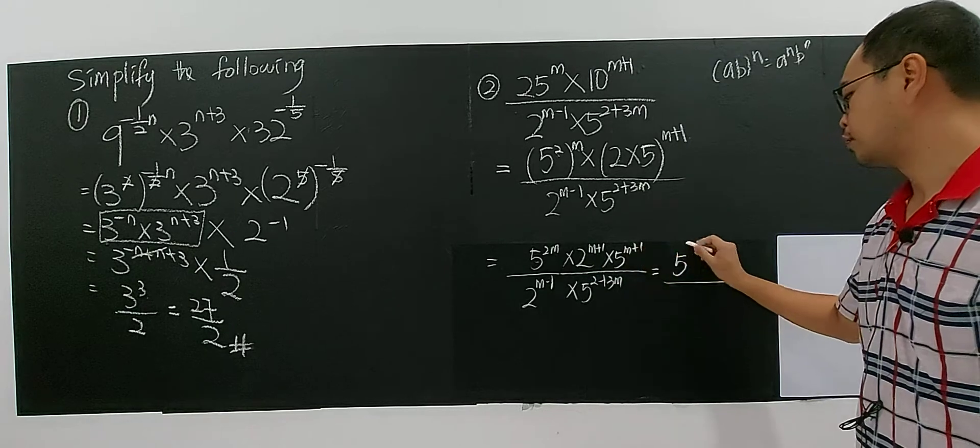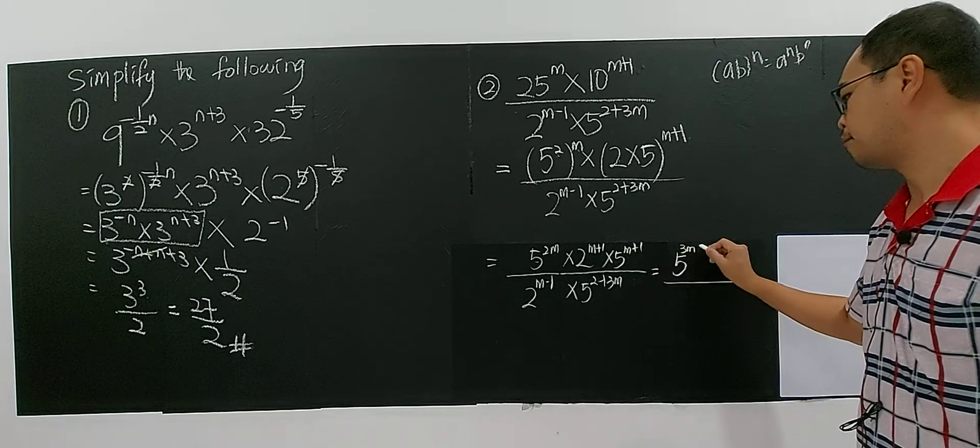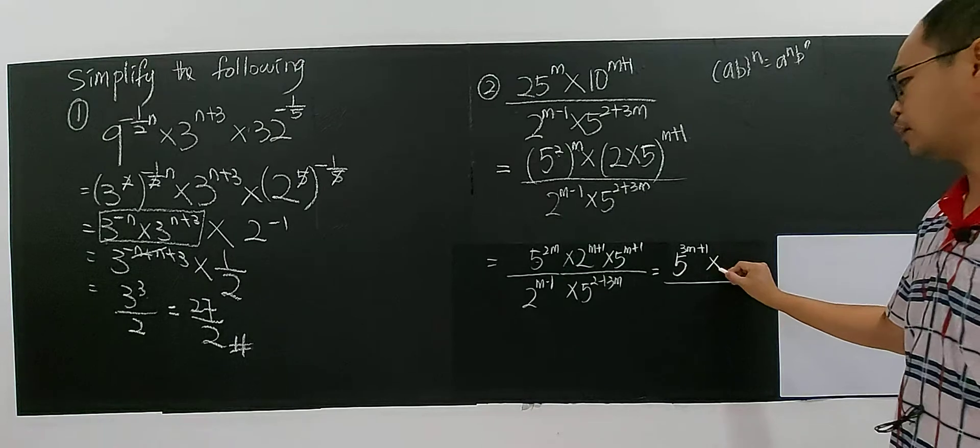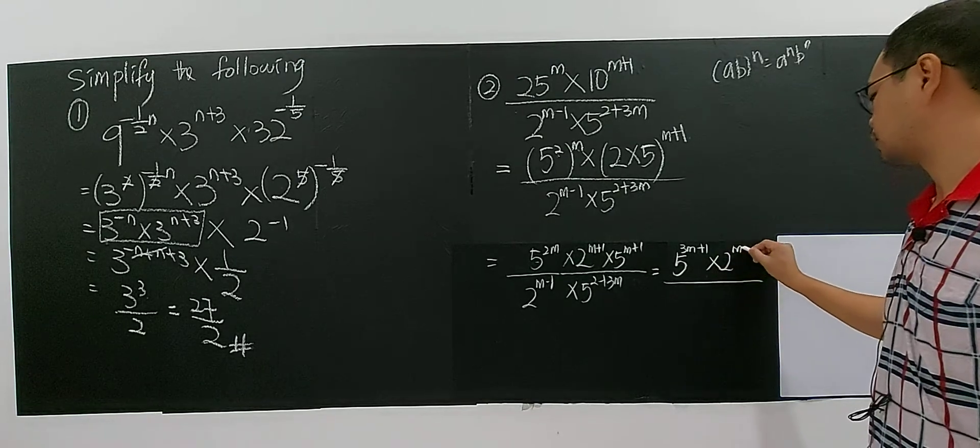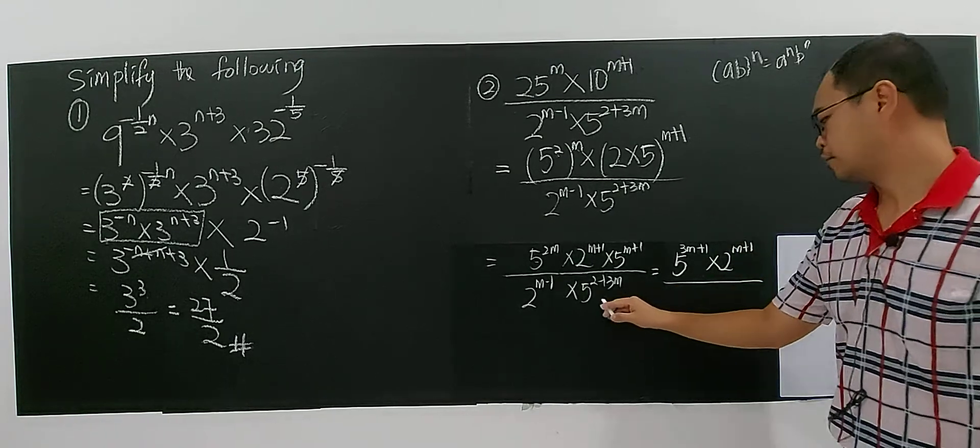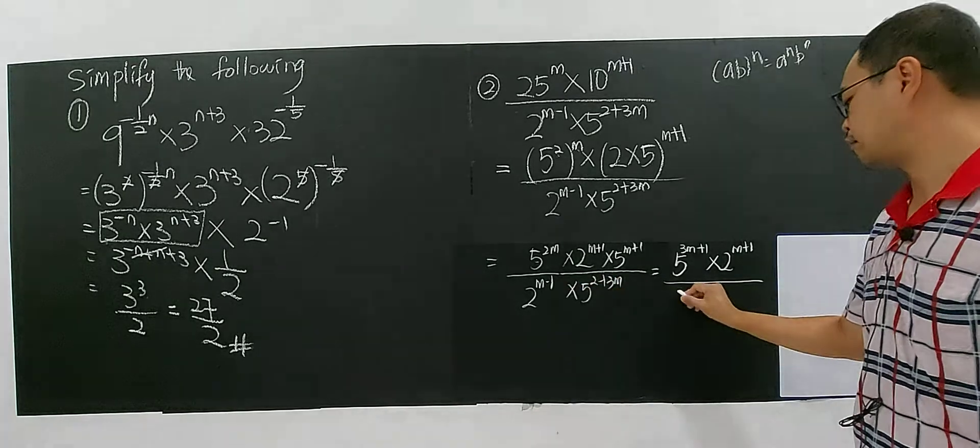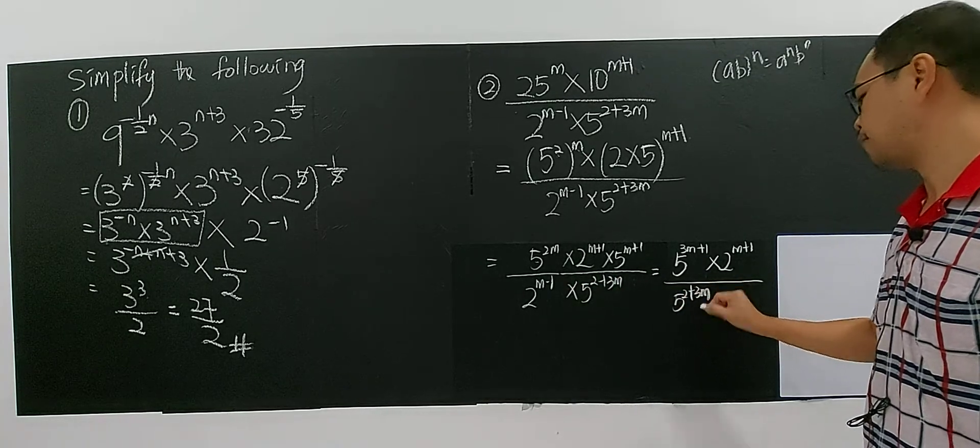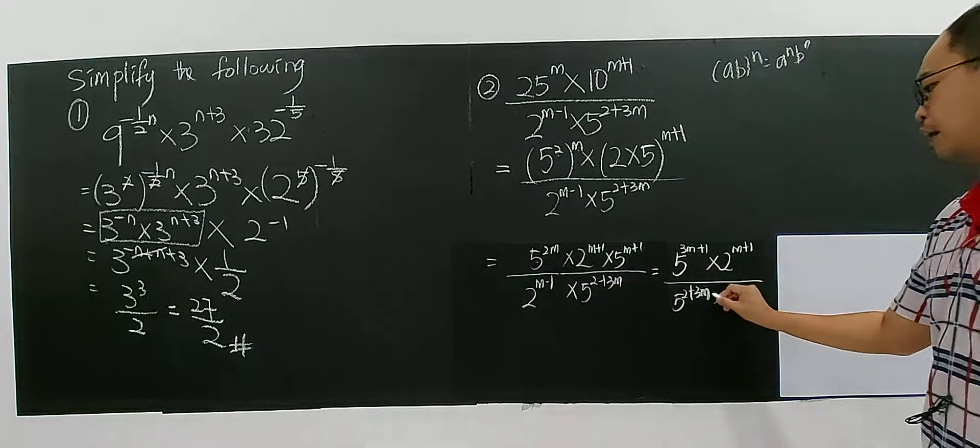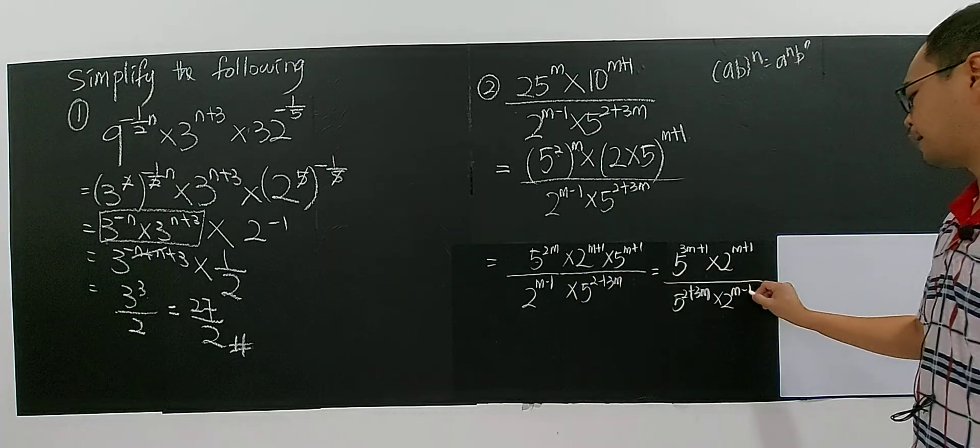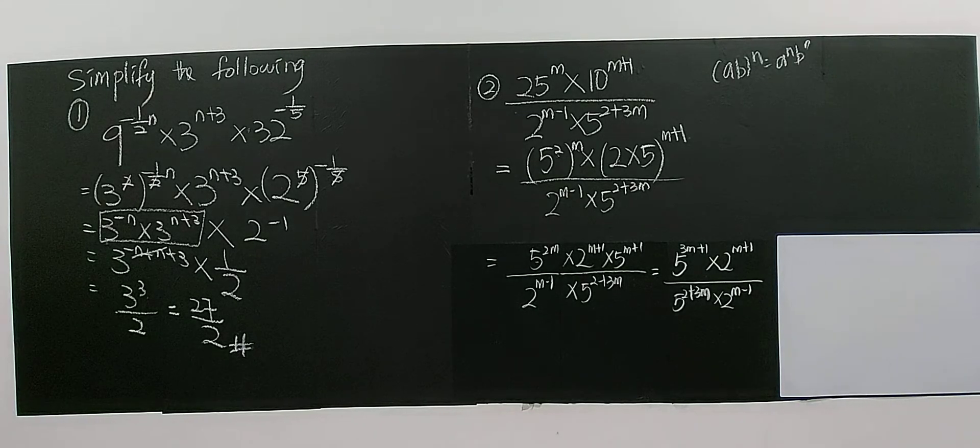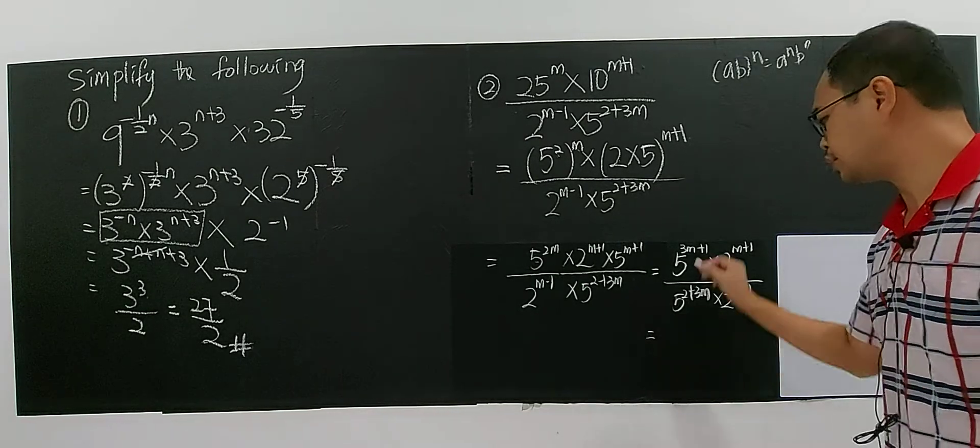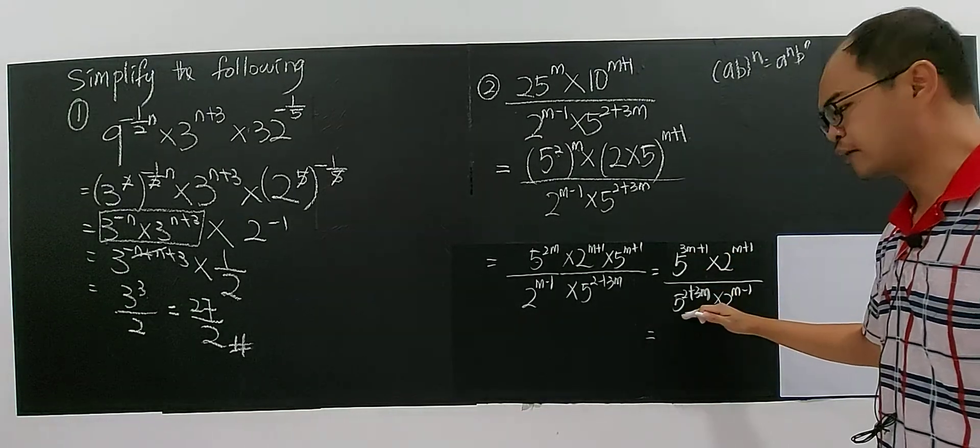2M plus M, you have 3M plus 1. Multiply with 2 to the power of M plus 1. And here, I try to put the 5 in front here. It's the same thing. 5 plus 3M multiply with 2 to the power of M minus 1. So now it's the time for you to do division. This is division. You take this divide by this 5, this divide by this because they have the same base. Once you divide.